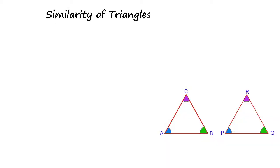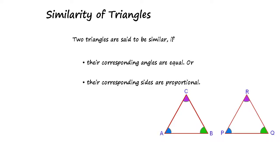Similarity of triangles. Two triangles are said to be similar if their corresponding angles are equal or their corresponding sides are proportional.